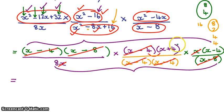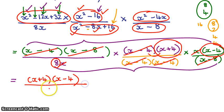x and x, which means at the top I'm left with x minus 4. Oh sorry, x plus 4 and x minus 4. And at the bottom I'm simply left with 8.